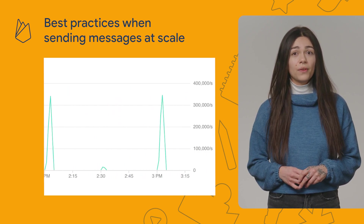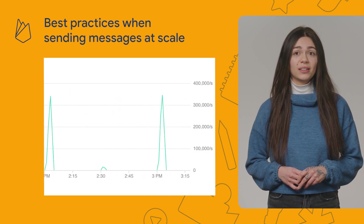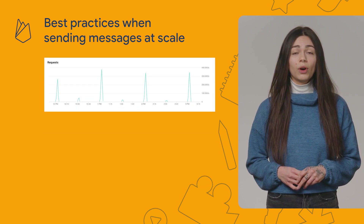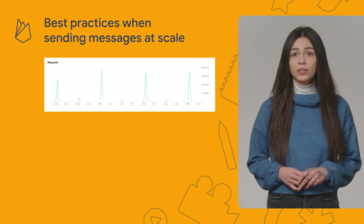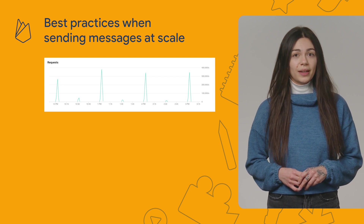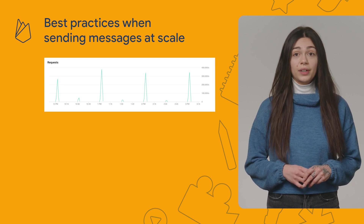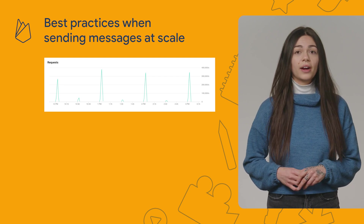To optimize resource usage, we need to reduce those spikes — both their number and their amplitude. The first thing you can do to smooth out these traffic spikes is to use FCM only for appropriate use cases.